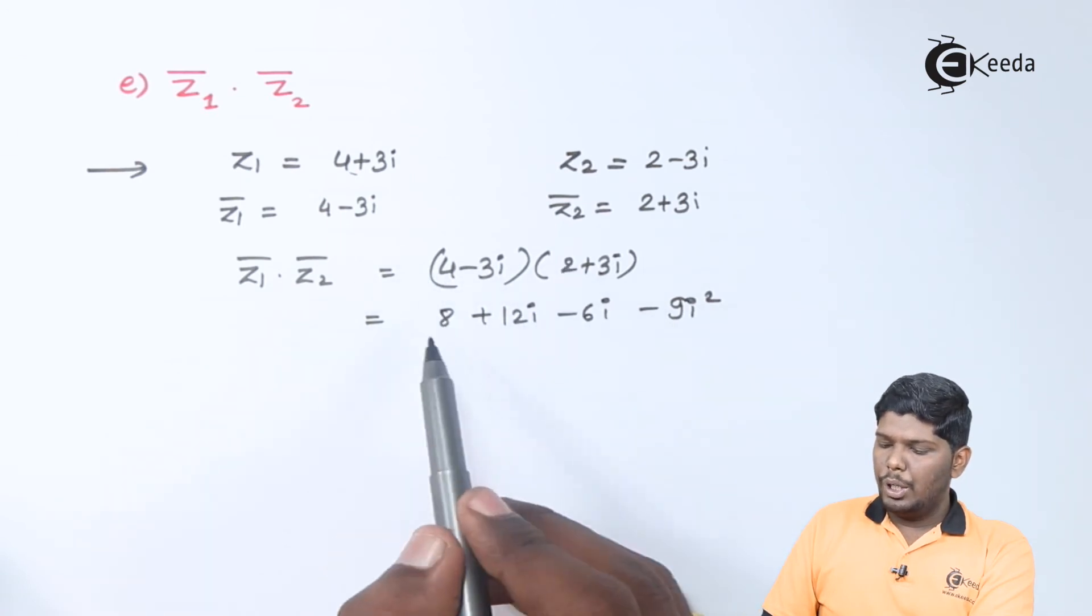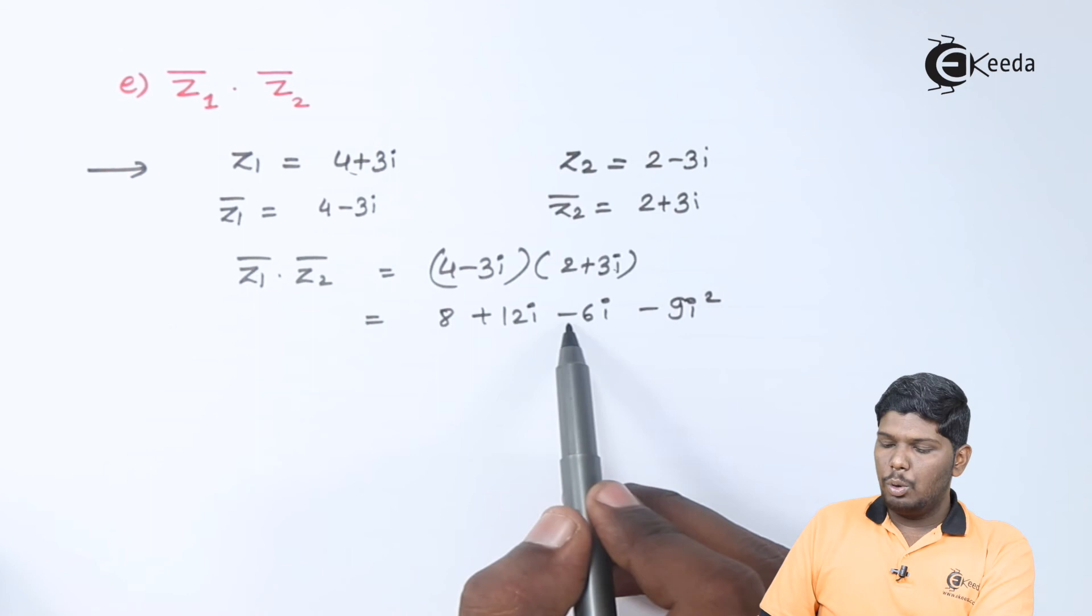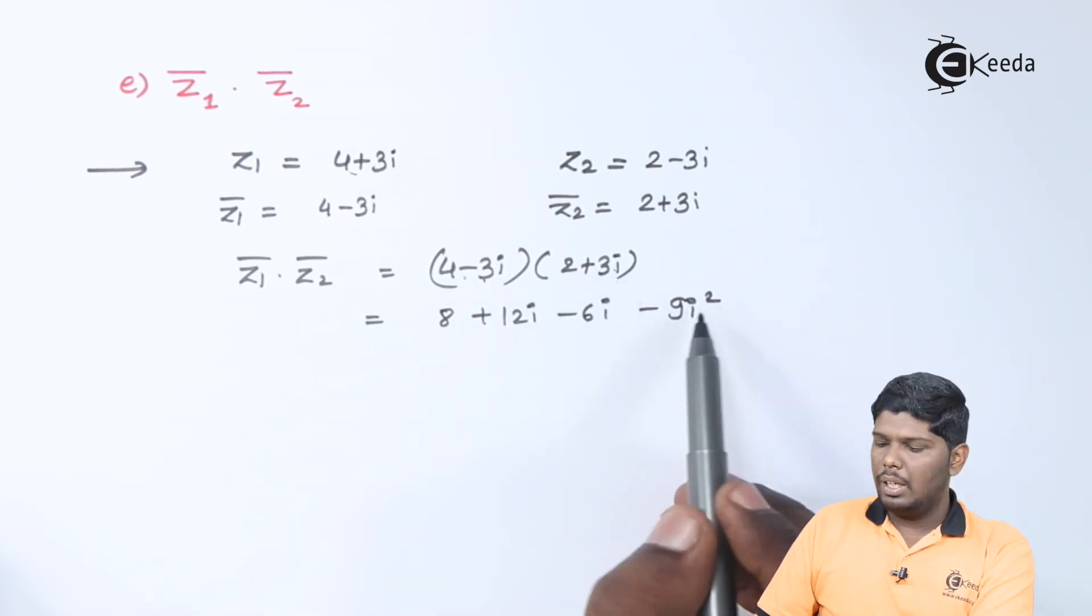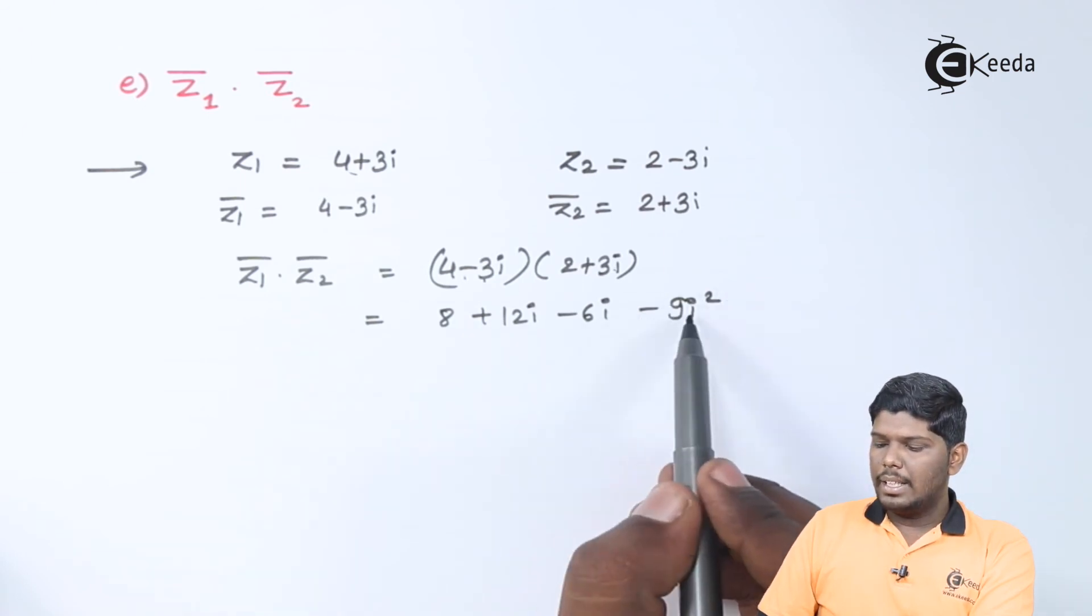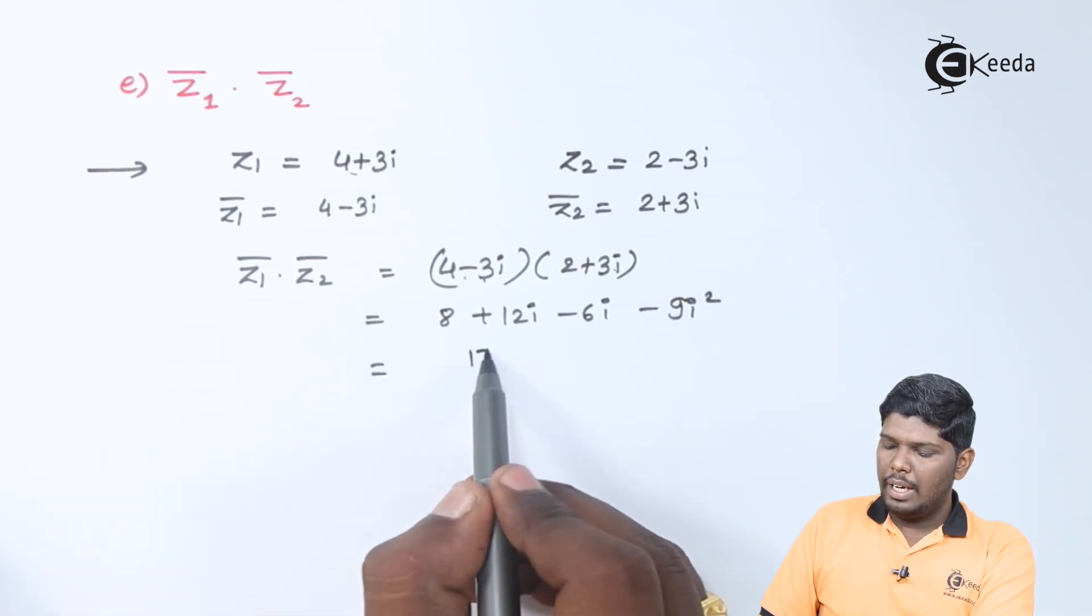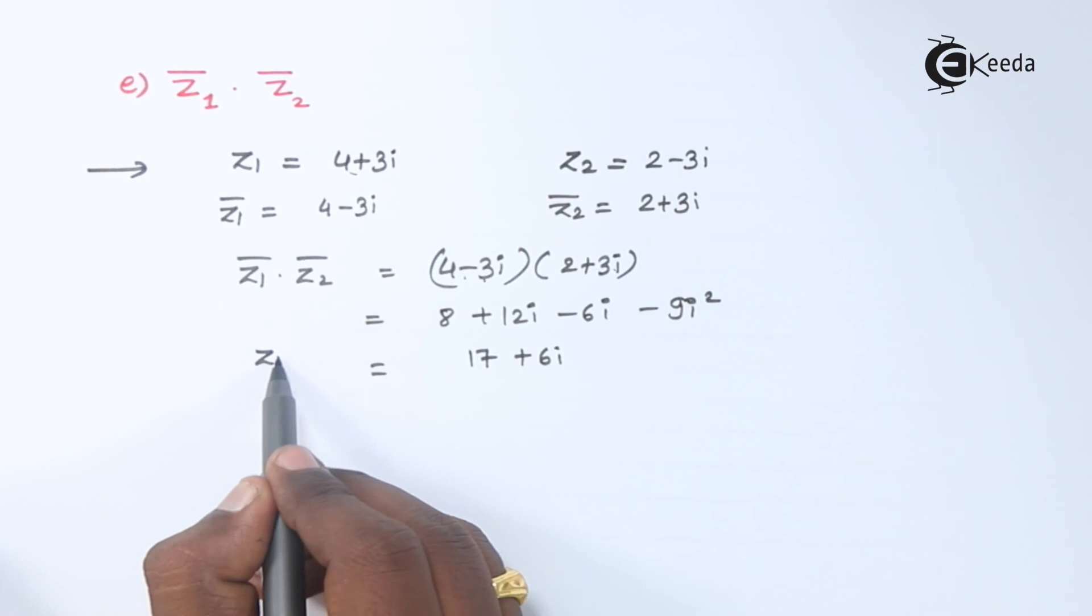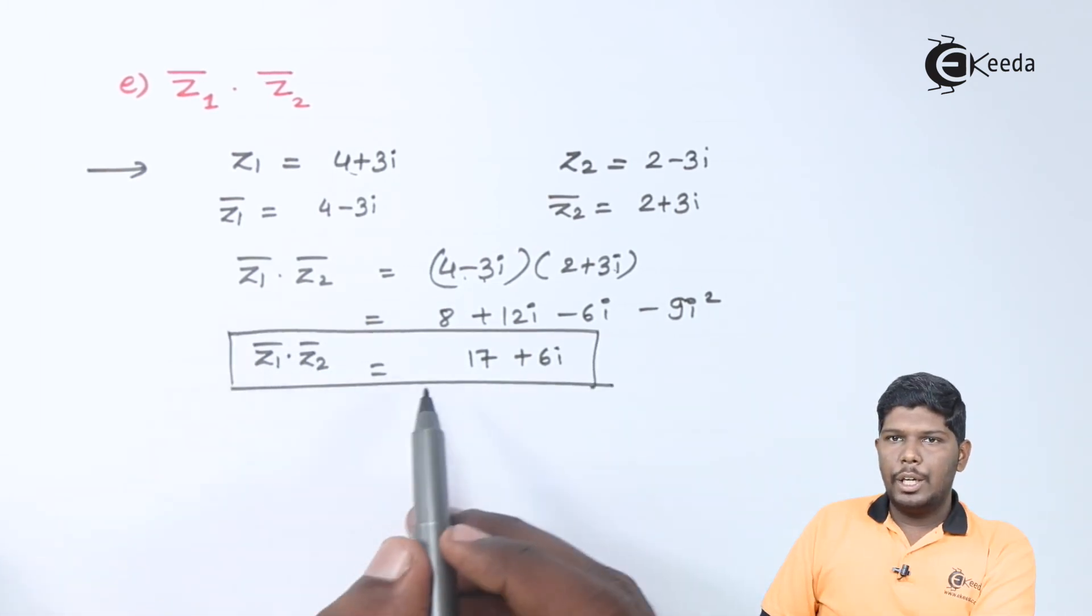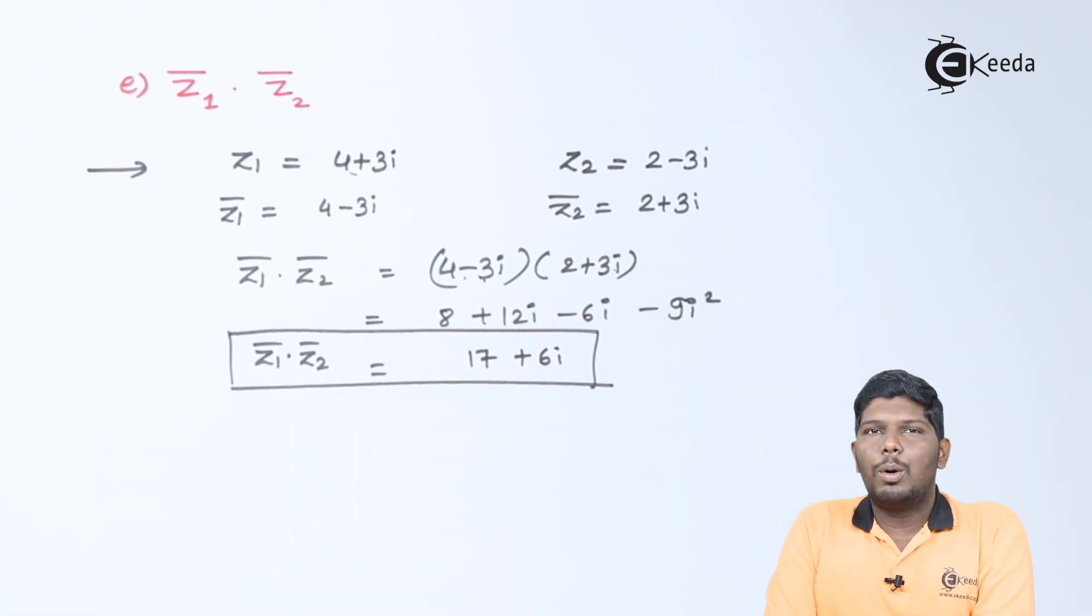On multiplication, this will give you 4 into 2 as 8, plus 4 into 3i as 12i, minus 3i into 2 as minus 6i, minus into plus will be minus and 3i into 3i will give you 9i square. The value of i square will be minus 1, minus 9 into minus 1 will give you plus 9 and 8 plus 9 will give you 17. 12 minus 6 will give you plus 6i. This becomes z1 bar into z2 bar as 17 plus 6i. I hope friends you have understood this problem.